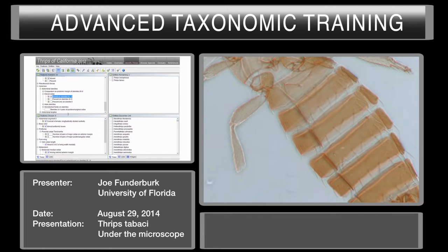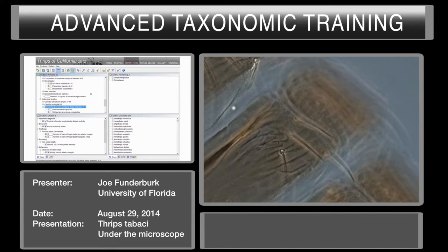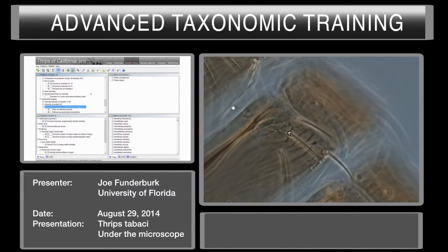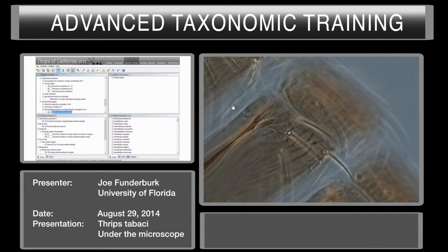We're down to two species. Now I go to the next best character: microtrichia presence on lateral thirds of tergites four through six. Very fortunately, we're already in that area. You can see this is a tergite, and here on the lateral thirds of the tergite you can see these rows of microtrichia. Very clearly — Thrips tabaci remaining.